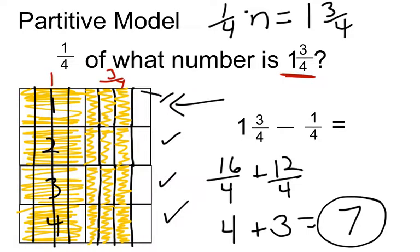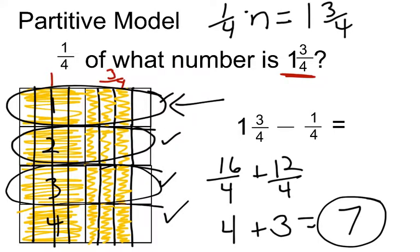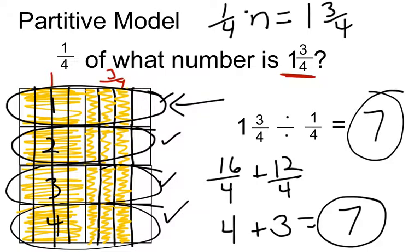So again, we have our 1 fourth representation. If that's divided into 1 fourth, we can see how we can change our division problem into 7 wholes.